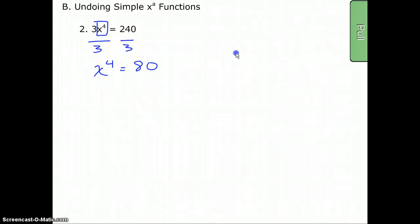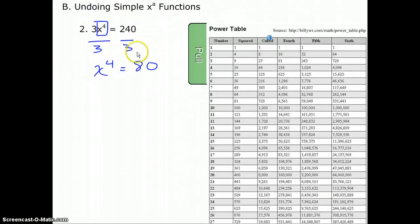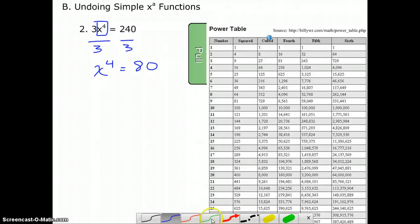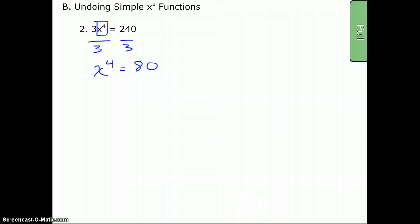And I could check on my power chart really quick. And I'm looking for the fourth column, or for fourths. So if I cruise down here, I don't see 80, but I do see 81. So I do know that my answer is going to be about 3. In fact, just a little shorter than 3. So keep that in mind as we move forward here.